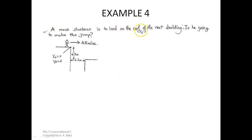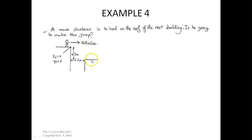A movie stuntman is to land on the roof of the next building. If you look at the diagram, he is on the taller building and is about to jump to another building of a lower height with a velocity of 4.5 meters per second. The top of the lower building to the top of the higher building is 4.8 meters, and the horizontal distance between the two buildings is 6.3 meters.